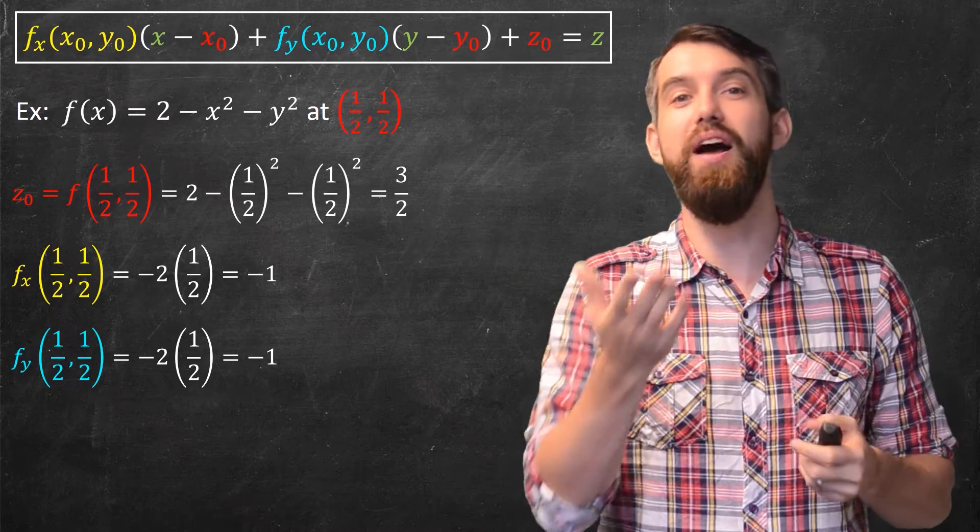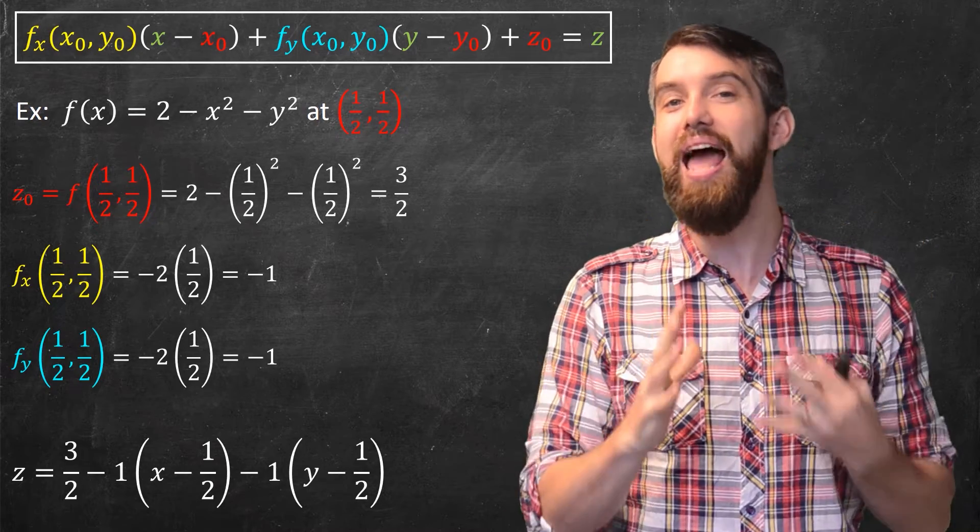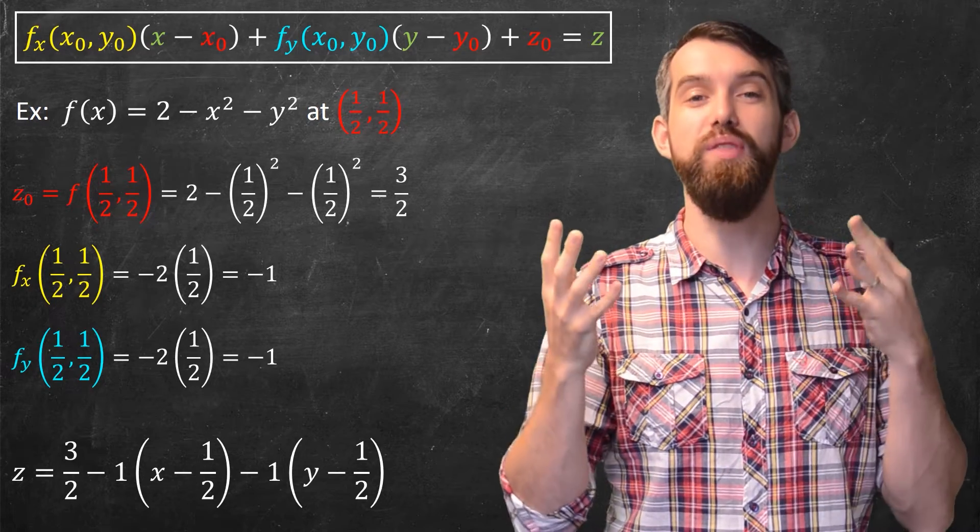Take those three points, plug it in, and finally I get the formula z is equal to 3 halves minus x minus 1 half minus y minus 1 half. And that's my equation for the tangent plane.